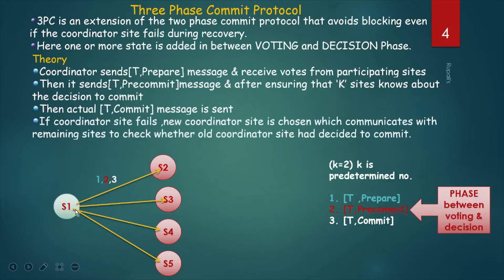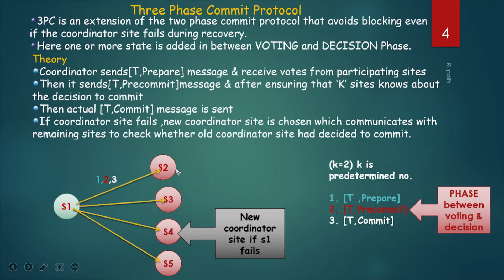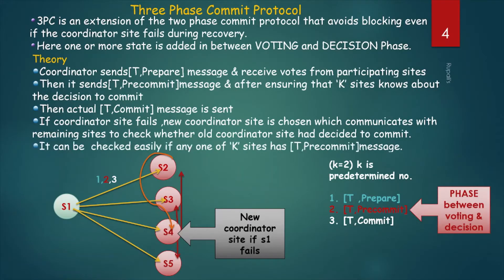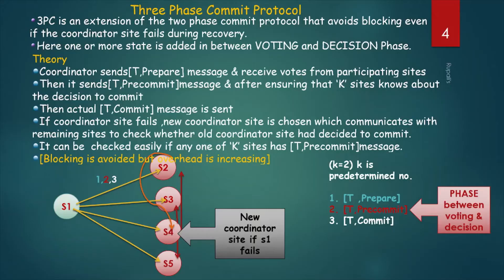If the coordinator site S1 fails, a new coordinator site S4 is chosen, which communicates with all remaining sites S2, S3, and S5 to check whether the old coordinator site had decided to commit. It can check by sending a message to all other participating sites, and if any of the K sites has a T-pre-commit message, the new coordinator can decide that the transaction can commit. By introducing this new phase, we can avoid blocking, but overhead is increased in the 3-phase commit protocol.